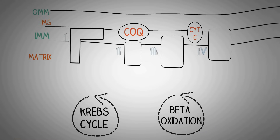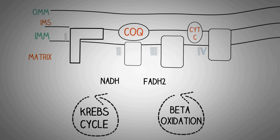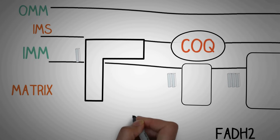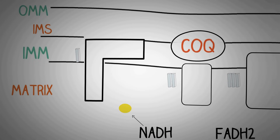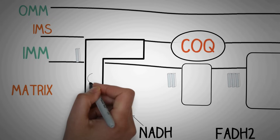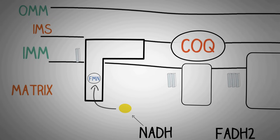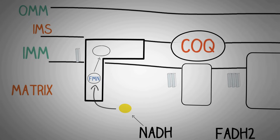These biochemical cycles generate reducing equivalents called NADH and FADH2. The electron transport begins when the NADH donates its electrons to the first complex. In the first complex, the electrons are first received by the flavin mononucleotide (FMN) prosthetic group, which then donates the electrons to the iron-sulfur proteins.